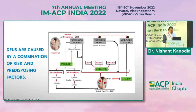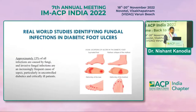Diabetic foot ulcers result from predisposing risk factors such as sustained hyperglycemia, which leads to abnormal immunity, angiopathy, and micro- and macroangiopathic changes causing ischemia and edema. Triggering factors include intrinsic motor, sensory, and autonomic neuropathies. Aggravating factors include previously non-healed infections. In real-world studies, approximately 15 percent of all infections are caused by fungi, and invasive fungal infections are increasingly causing sepsis in uncontrolled diabetic patients, who may end up critically ill in the ICU.